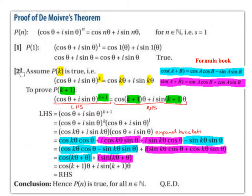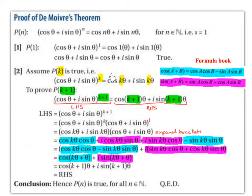Step 2: assume P(k) is true, i.e., cos θ + i sin θ to the power of k equals cos kθ + i sin kθ. All we've done is swap each of the n's for k.